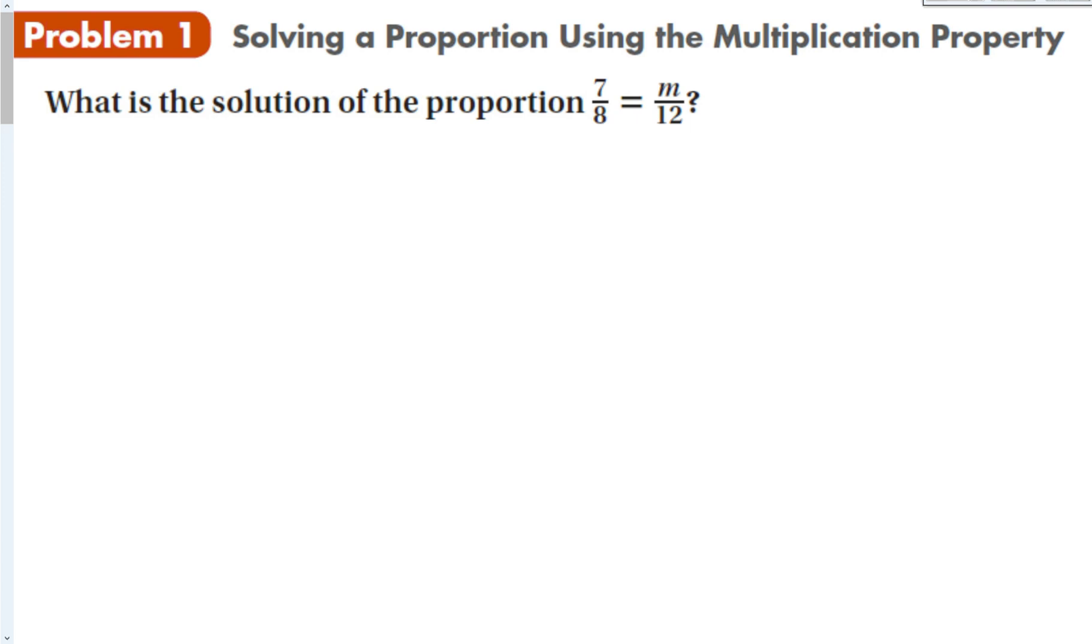Let's look at our first proportion here. 7 over 8 is equal to m over 12. Let's solve this using the multiplication property. I have 7 over 8 is equal to m over 12. My variable m is divided by 12, so what I can do is multiply both sides of this equation by 12. Those will cancel out. On the left-hand side, we would have 12 times 7, which is 84 over 8 is equal to m.